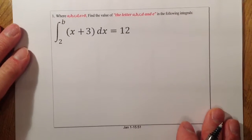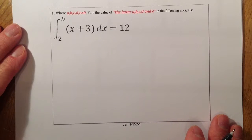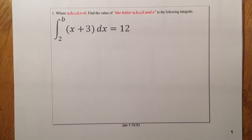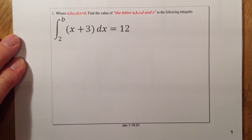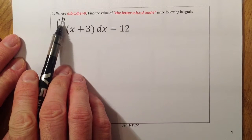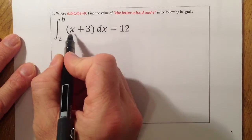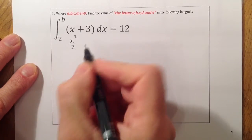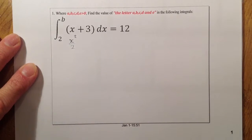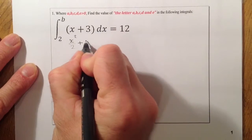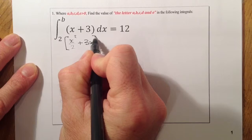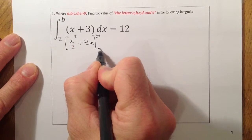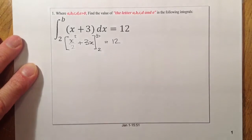Let's move along to part B. Remember, you can freeze the video and do the work yourself to see if your solution matches mine. Same as we did above, we're going to integrate first of all and try to find the value that should be placed here. So that's going to give me x squared all over 2, plus 3x. I've got limits of B and 2, and that's all going to be equal to 12.